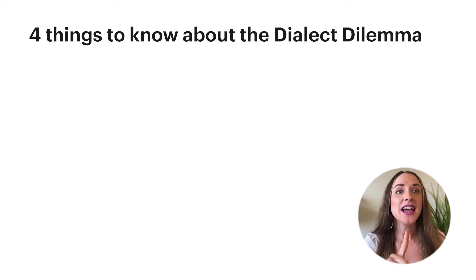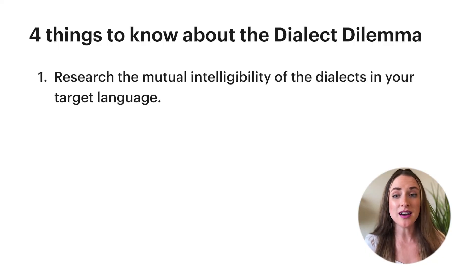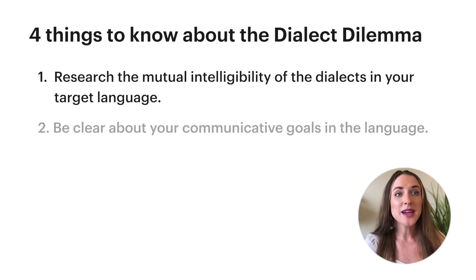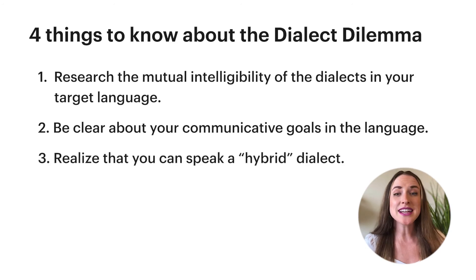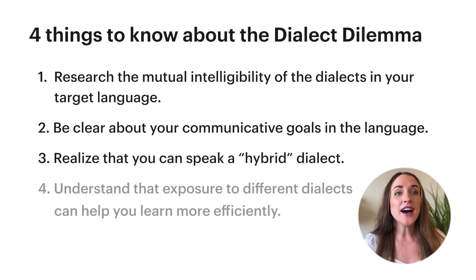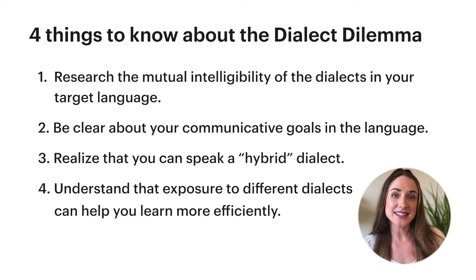Well, there you have it. The four things that you need to understand when it comes to navigating the dialect dilemma were: one, research the mutual intelligibility of the dialects in your target language; two, be clear about your communicative goals in the language; three, realize that you can speak a hybrid dialect; and four, understand that exposure to different dialects can help you learn more efficiently.